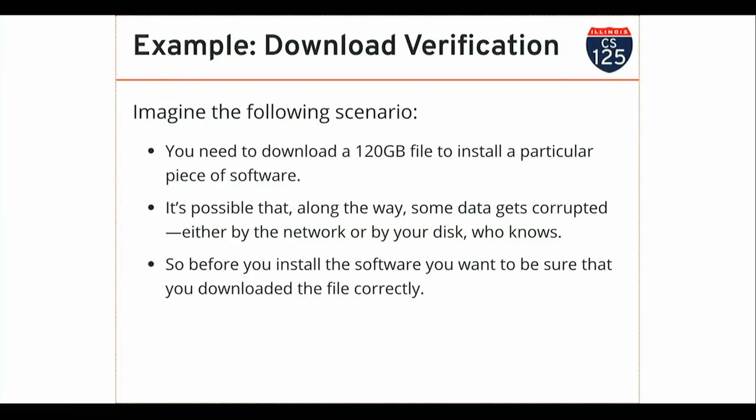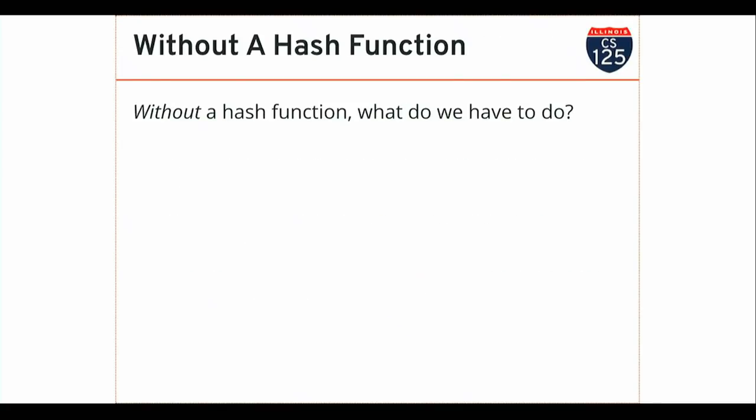Particularly when you're installing software, a small mistake might lead to a pretty big problem — it could damage my computer. Before I double-click on this and install it, I want to make sure it's the file the sender wanted me to have, with the exact correct content. This is a big file with lots and lots of bytes. Without a hash function, my options are pretty limited: I can download the file again and then compare the contents, but both of these steps are really slow.